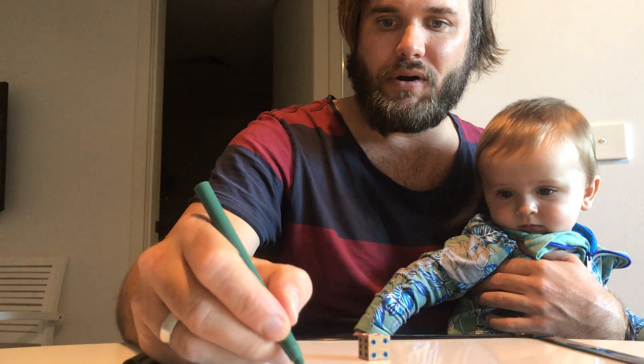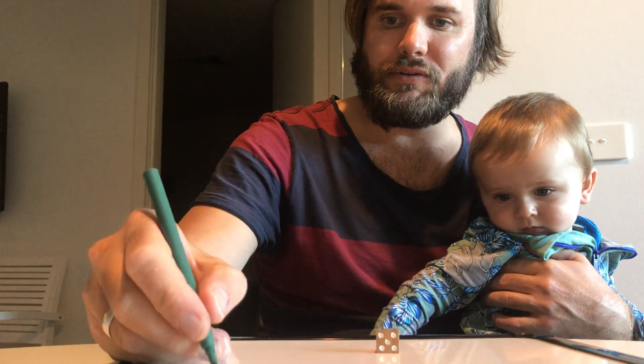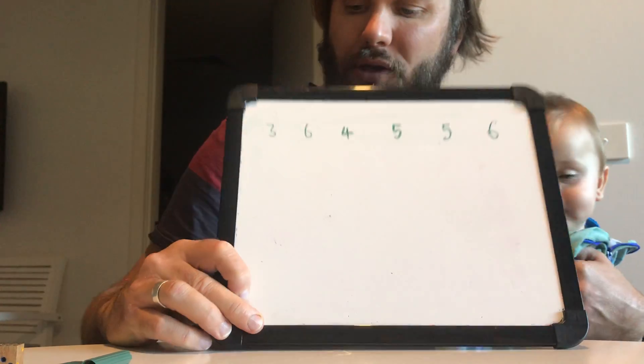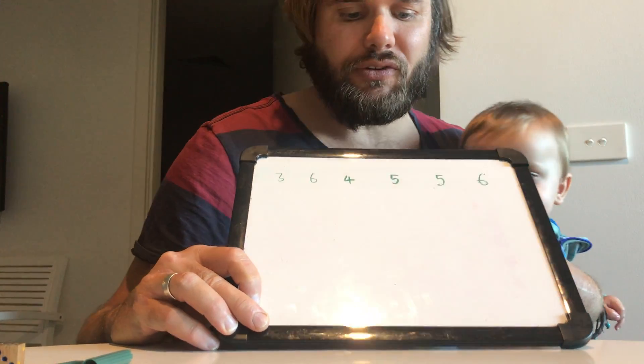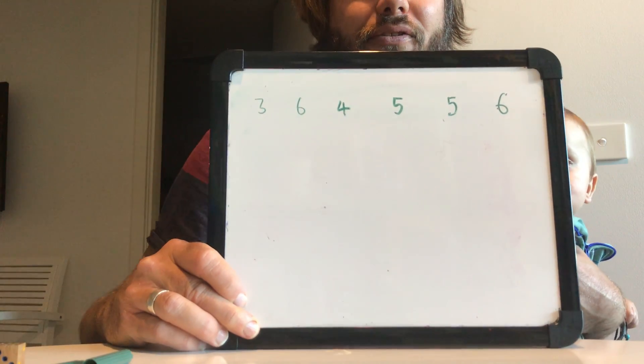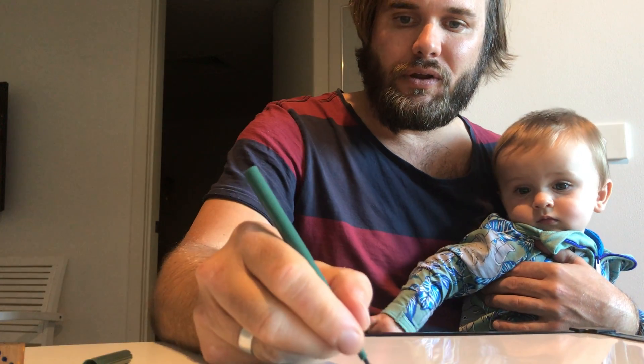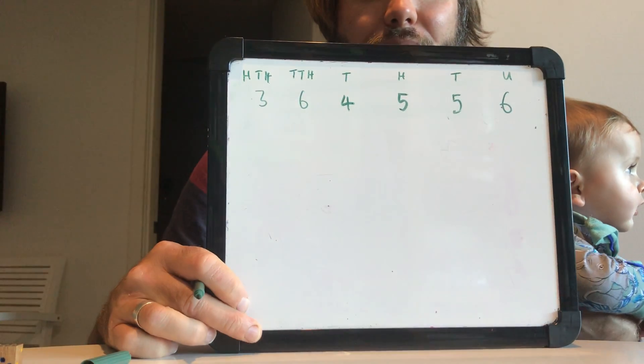Now I've got a six-digit number because I'm working in hundred thousands. Get a student to read it out — it's three hundred and sixty-four thousand, five hundred and fifty-six. It wouldn't hurt to get students to identify where each digit sits in the place value: units, tens, hundreds, thousands, tens of thousands, and hundreds of thousands. Get them to label and identify them.